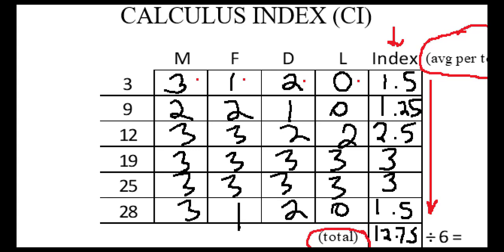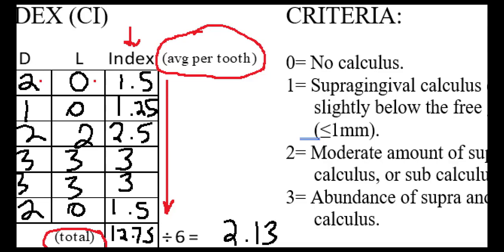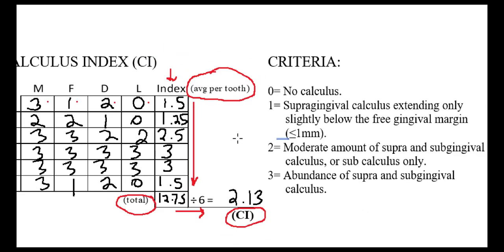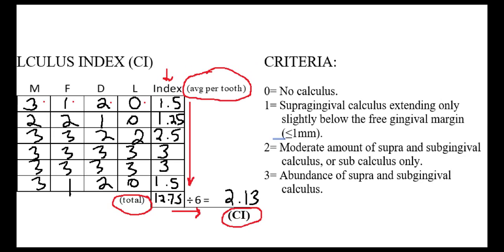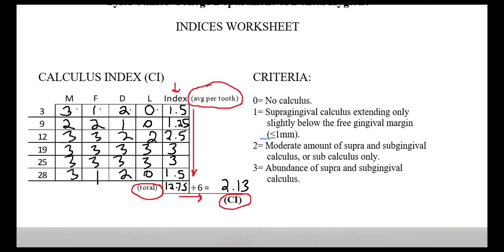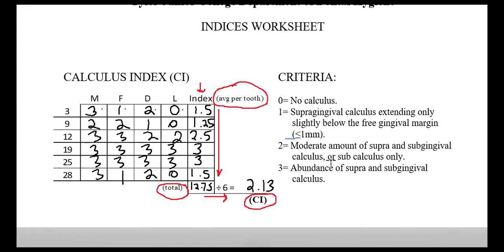So as you can see, I got 2.13 for my overall calculus index. I'm going to shrink that back so we can look at the criteria together. Your calculus index should resemble what the criteria says.